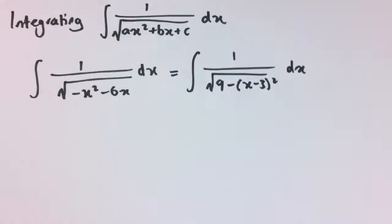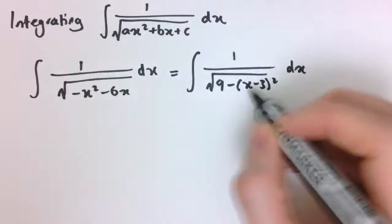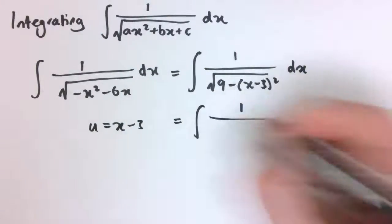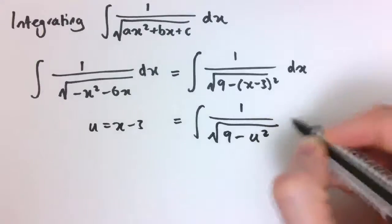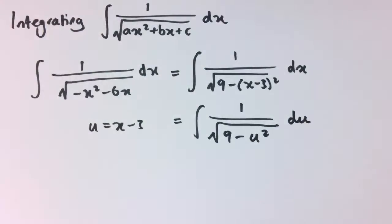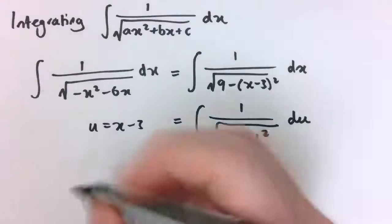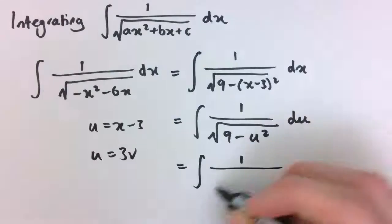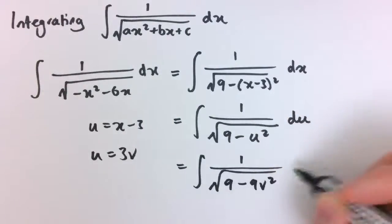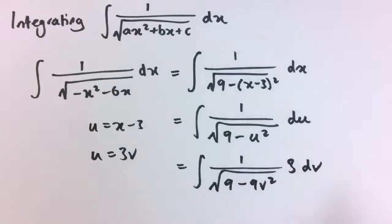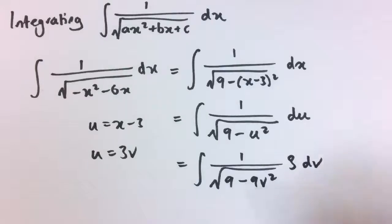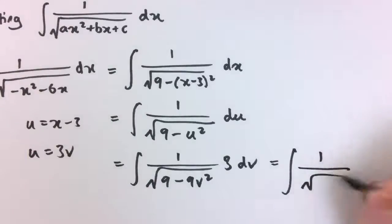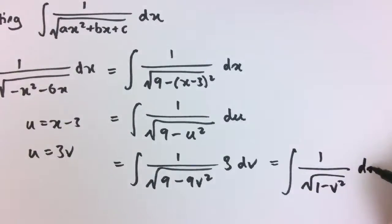But I'm not going to worry too much about that in this video. I'm just going to show you the technique for actually doing the integration. As before we'll make a substitution here, so u equals x minus 3 turns this into 1 divided by the square root of 9 minus u squared du. Then we can make another substitution, so I can say u equals 3v, and that makes this 1 over the square root of 9 minus 9v squared times dv. We see that the 3 cancels with the square root of 9, that's a factor of the denominator here, so this is just 1 over the square root of 1 minus v squared dv.